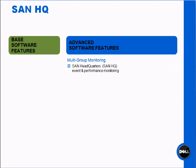Also, under the advanced software features, we have SAN HQ, or SAN Headquarters. This is the definitive application or tool that you'll use to understand every aspect of performance with disks, snapshots, clones, thin provisioning, and replication when it comes down to the performance of your EqualLogic array.